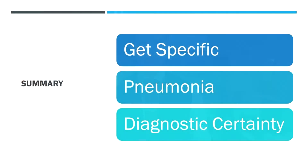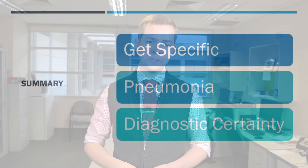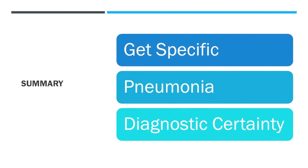To summarize: we've talked about getting specific with our terminology and how that unlocks accurate, quality documentation and therefore coding. We've talked about the intricacies of pneumonia — moving from non-specific to specific and codable diagnoses, and adding underlying lung conditions and complications as complexity markers. And lastly, we've talked about diagnostic certainty and how to express that in medical documentation.